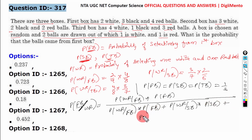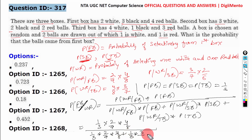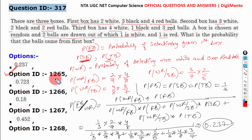Substituting the values: numerator is 1/3 × 2/9 × 4/8; denominator is 1/3 × 2/9 × 4/8 plus 1/3 × 3/7 × 2/6 plus 1/3 × 4/8 × 3/7. Based on this, the correct answer is 0.237. This is option A, and the question is categorized as competitively easy in difficulty.